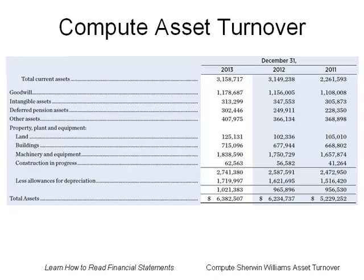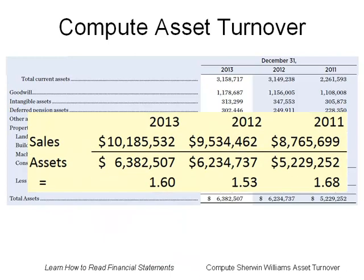Next we turn to the balance sheet to find the figure for total assets. Total assets is the last line on the asset side of the balance sheet. It is $6,382,507,000 for 2013. We plug that figure in the bottom part of the fraction and divide the two numbers to compute the asset turnover for the three years.